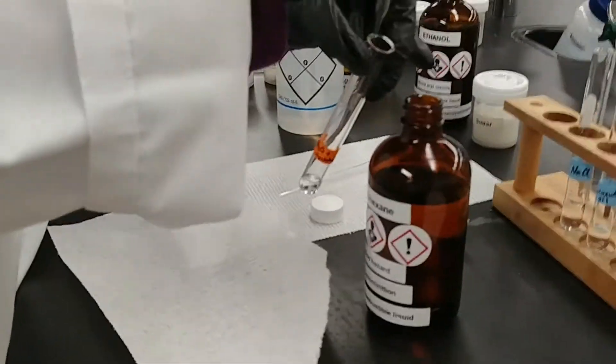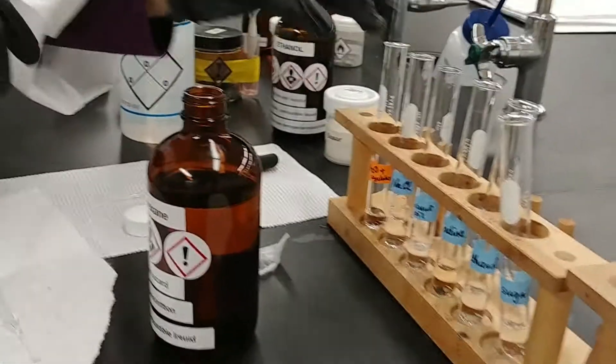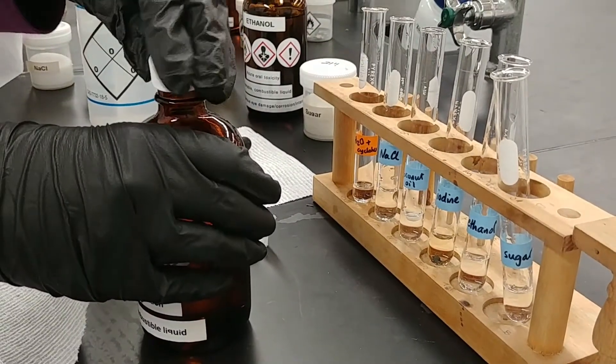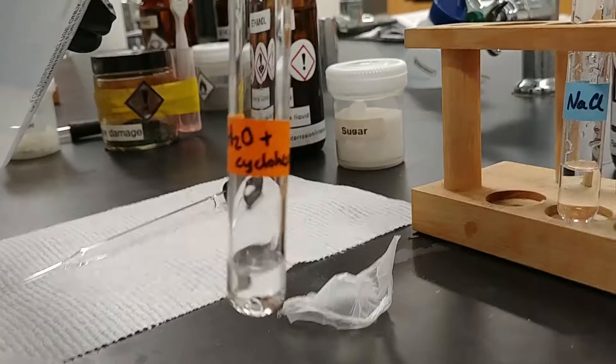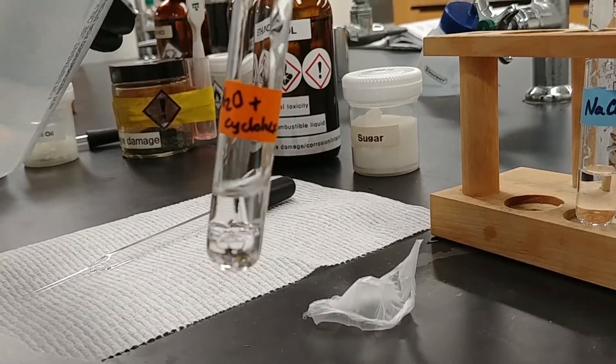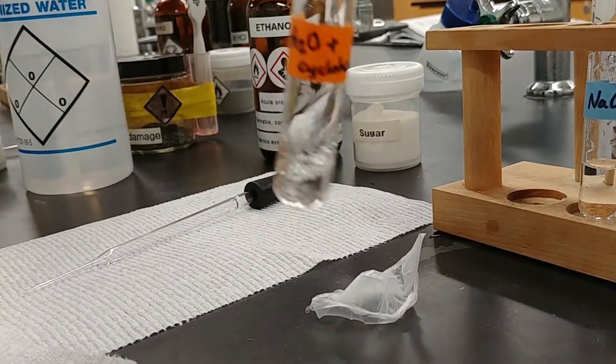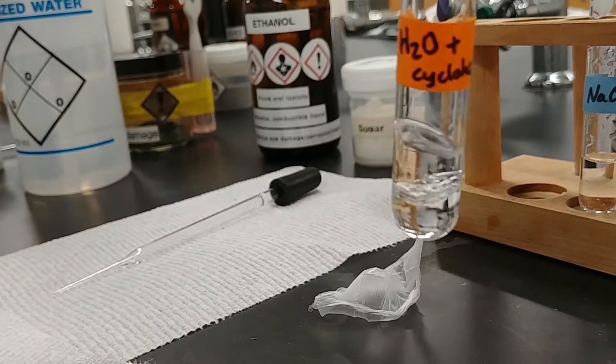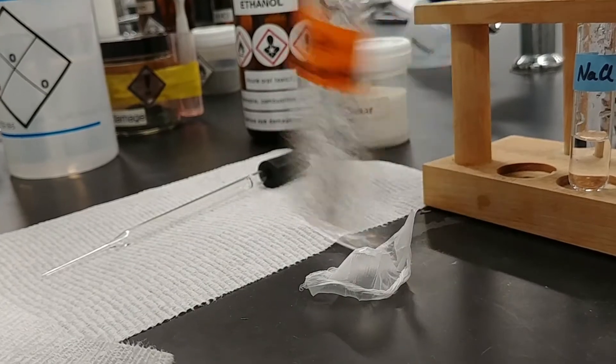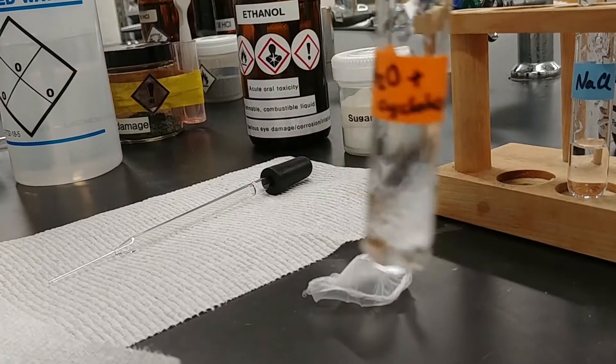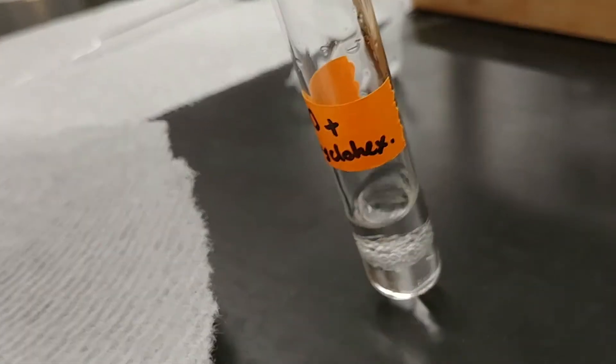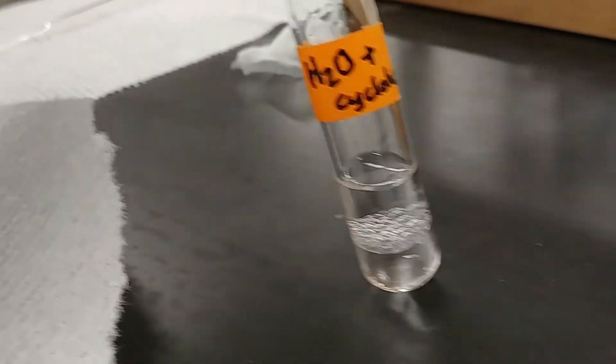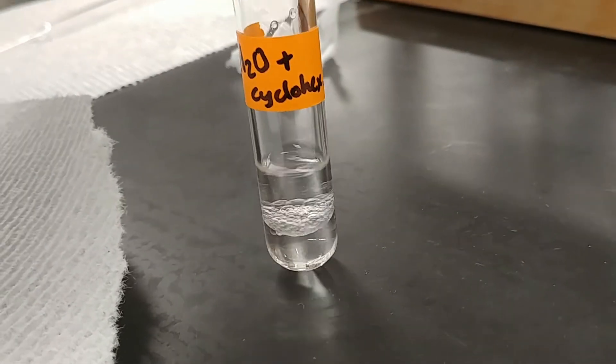So one milliliter thereabouts of the cyclohexane, and we'll add about one milliliter of water to that. So these two liquids do not like to mix. Water is polar while cyclohexane is nonpolar. So you can see that double layer there. So this is what we're looking for when we're deciding whether a liquid is immiscible.